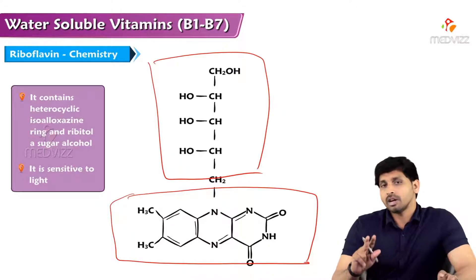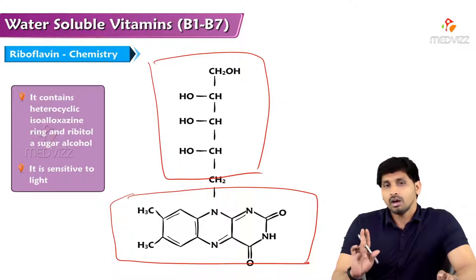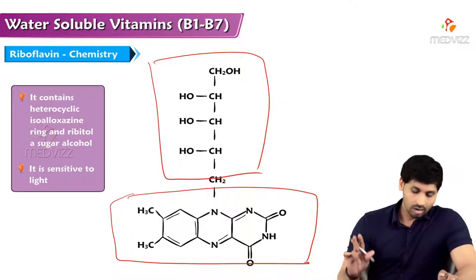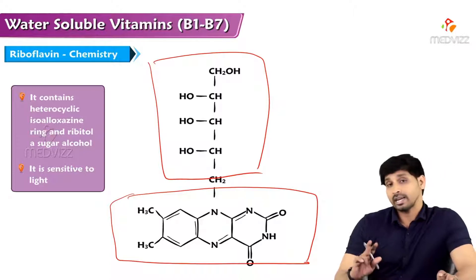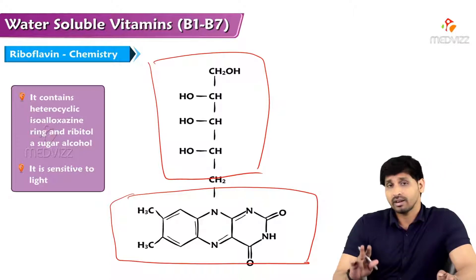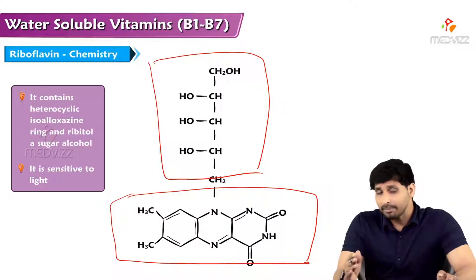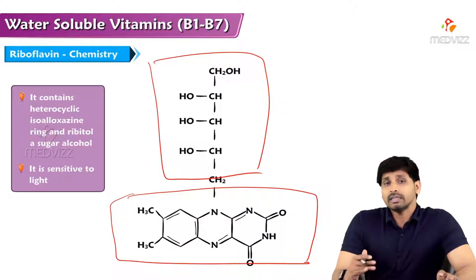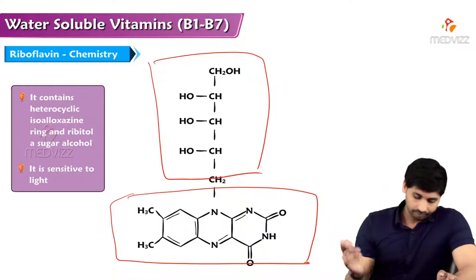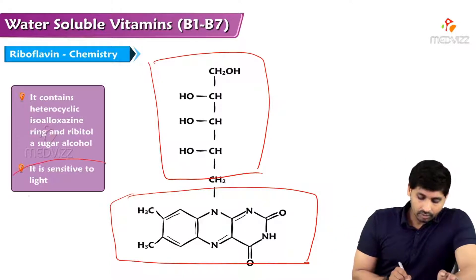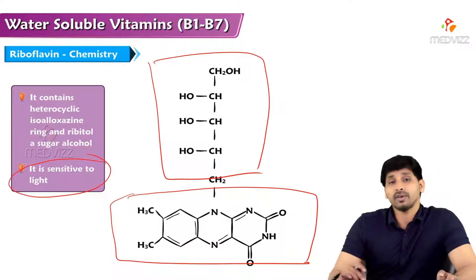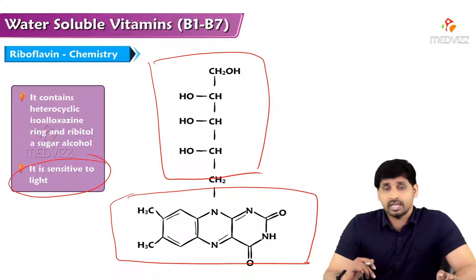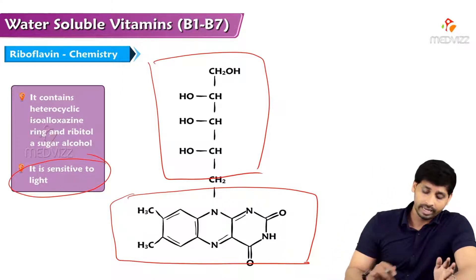Chemically, riboflavin is made up of two parts: one is the heterocyclic isoalloxazine ring, and the second part is the sugar alcohol, that is ribitol. It is sensitive to light, so riboflavin is photosensitive — when exposed to light, it may undergo degradation.